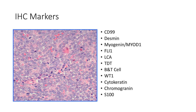Immunohistochemical markers can be used to differentiate the various small round cell tumors. This is a panel which is commonly used to differentiate these neoplasms. CD99 is a marker used for Ewing sarcoma but it is not a specific marker. Desmin and myogenin are used for rhabdomyosarcoma. FLI1 is used for Ewing sarcoma but is again not a specific marker. LCA is leukocyte common antigen, TDT is terminal deoxynucleotidyl transferase, and B and T cell markers are used to differentiate lymphomas. WT1 is a marker for desmoplastic small round cell tumor. Cytokeratin will stain Ewing carcinomas but is not specific.